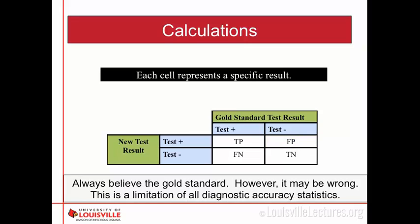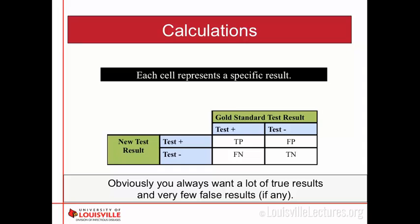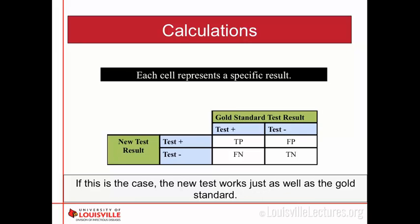Your false positives are where the gold standard says negative and the new test says positive. You always want to believe your gold standard — even if it's wrong, this is one of the limitations to diagnostic accuracy testing. You always want a lot of true results and very few false results. If every cell were equal, the new test worked just as well as the gold standard.